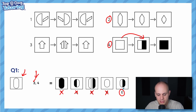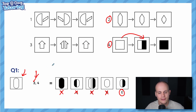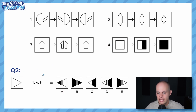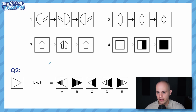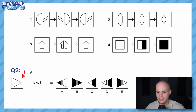So the idea is: a bunch of different transformations each given a number, and you do them in order. This next question has three operations — and note that they don't have to be in numerical order; here it goes one, four, three. Pause the video and have a go: would you get A, B, C, D, or E when applying these three transformations in order?